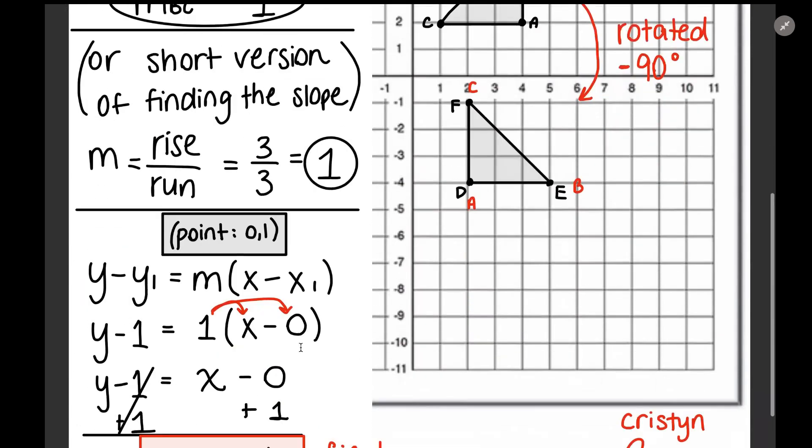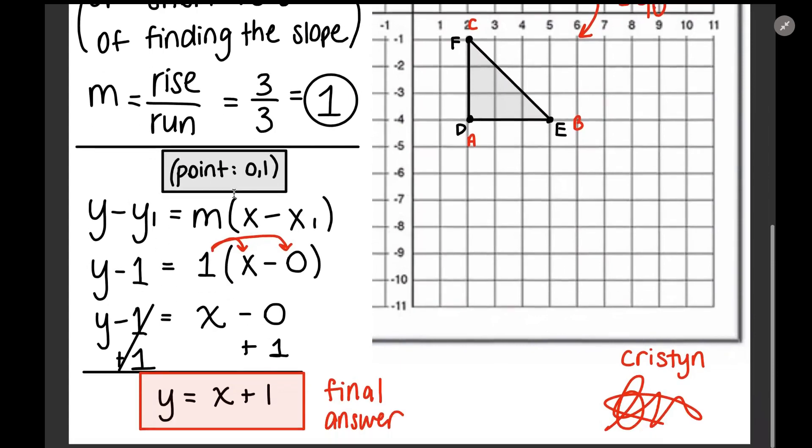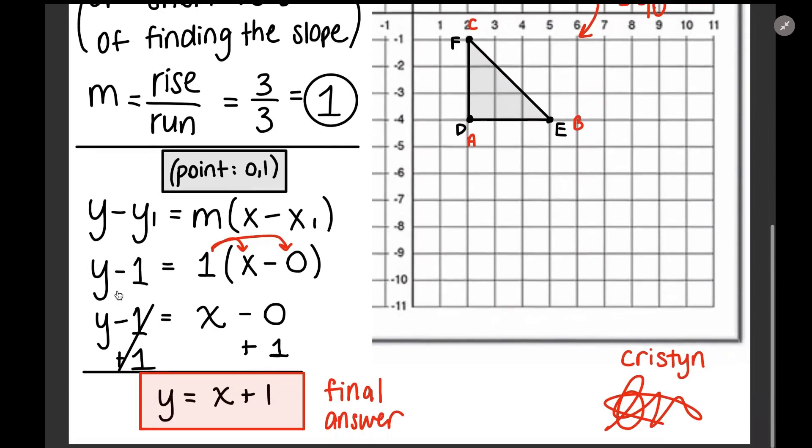And then you also told me that the point that they intersect is at 0, 1. So since I found my slope being 1, my point 0, 1 I'm going to plug into the point slope formula which is y minus y1 equals m times x minus x1.